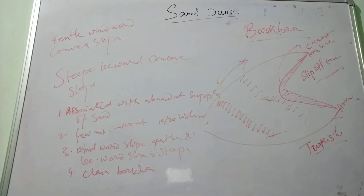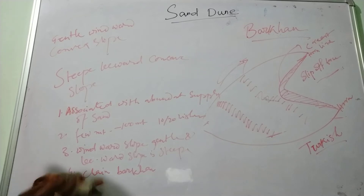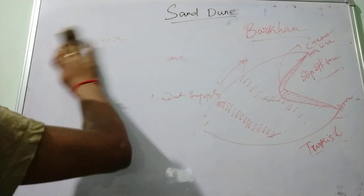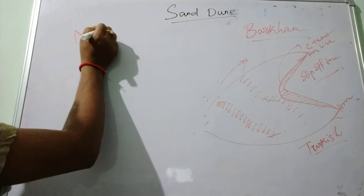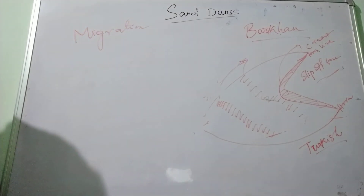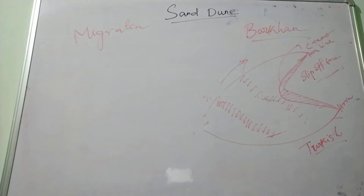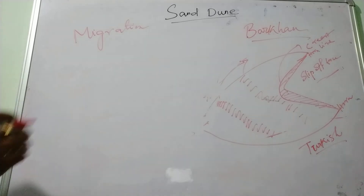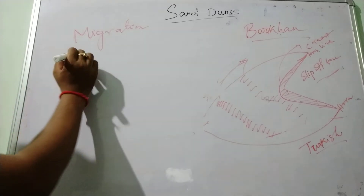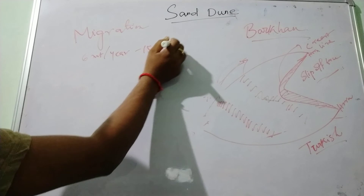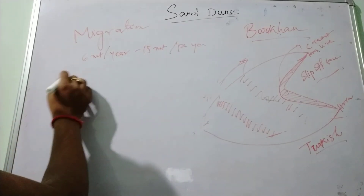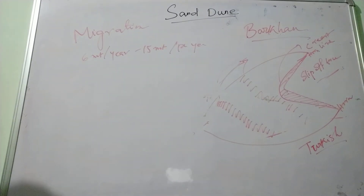Now coming to the migration of the barkhan. Barkhans are generally migrated in the direction of the wind. This is due to the fact that the wind erodes on the windward side and deposits on the leeward side. Generally, small barkhans migrate from 6 meters per year to 15 meters per year, depending on the abundance of sand supply and the wind direction.